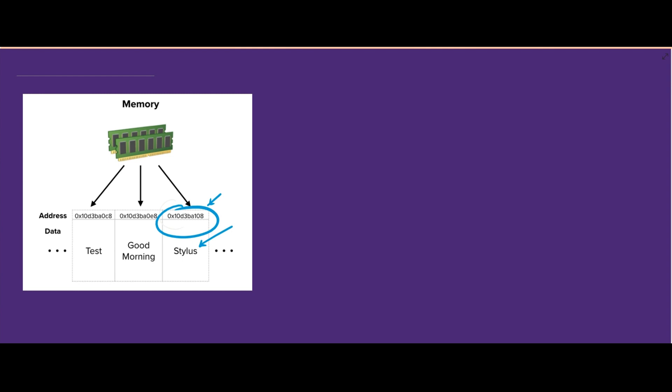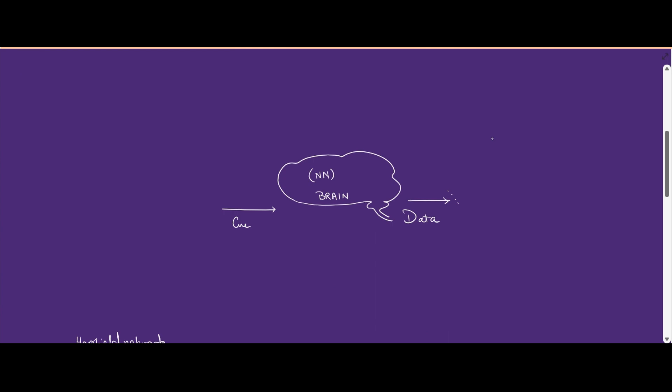Let us lay the foundations for the later sections of this video. In conventional computer memory, we usually give an address to the memory and from that particular address we retrieve the data associated with that address stored in that memory device. However, human associative memory does not work in such a manner.